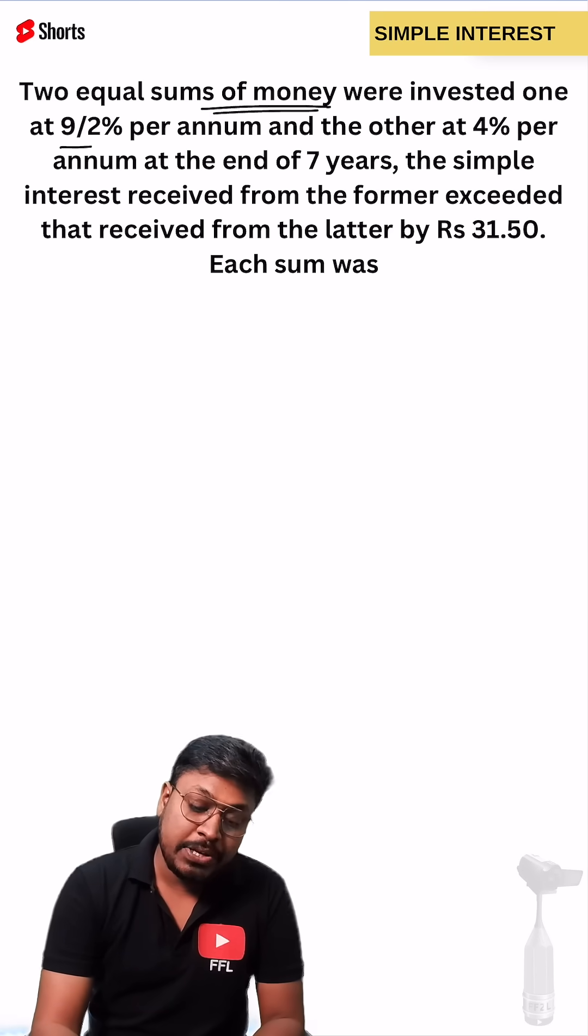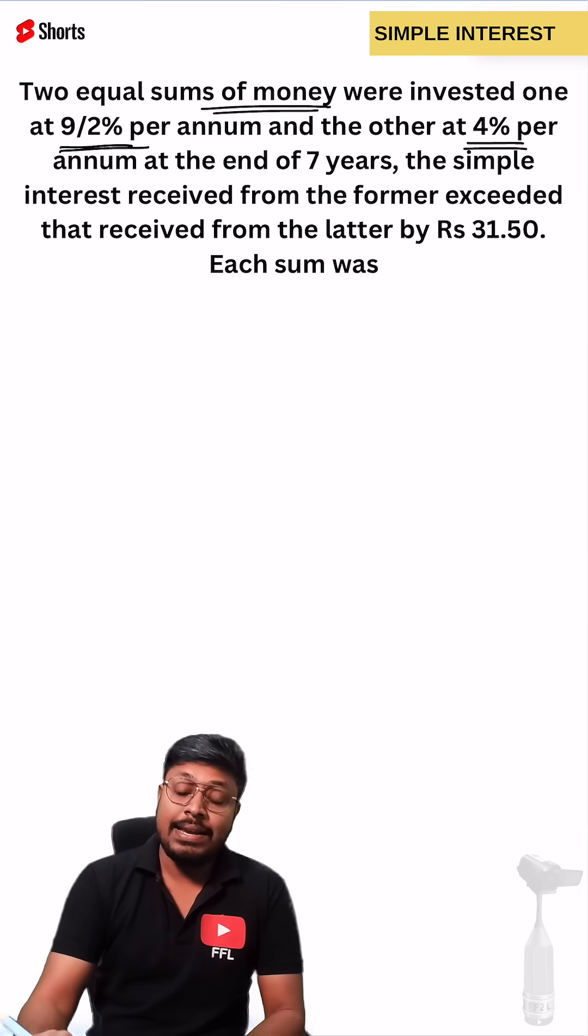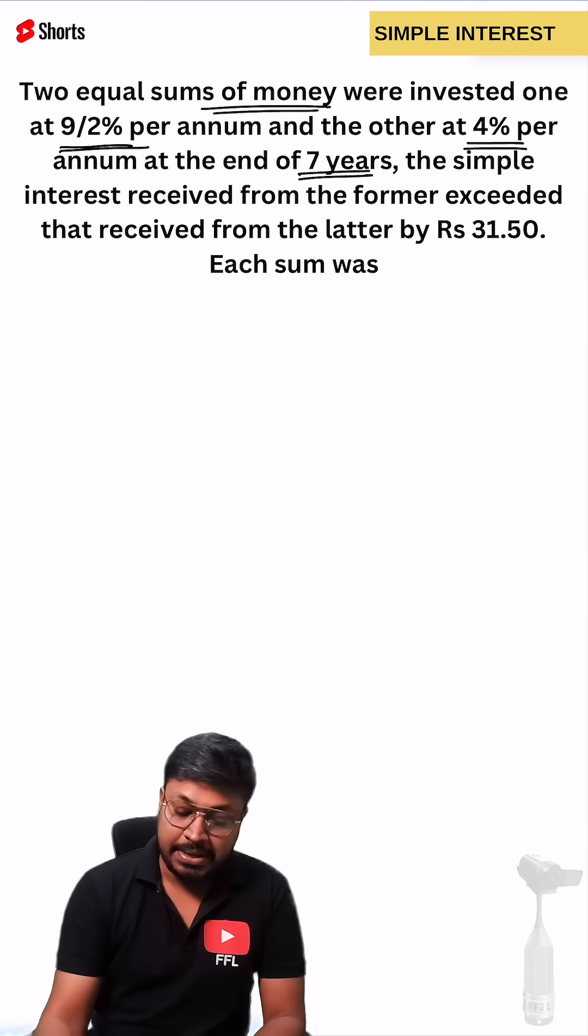First you can see 9/2 percentage per annum, the first interest. Second interest is 4 percentage per annum and the year is also given, that is 7 years.